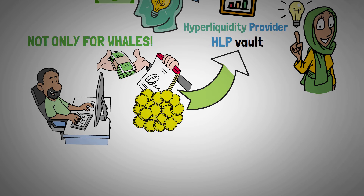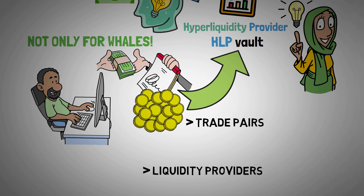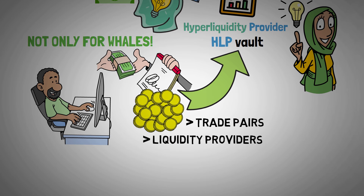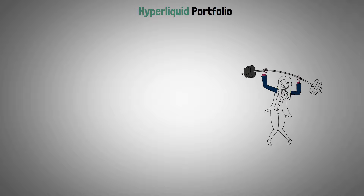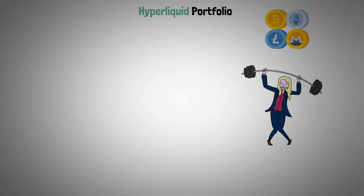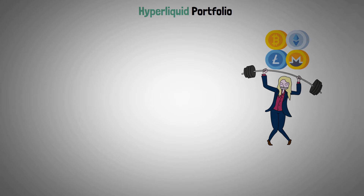Assets can be placed into these vaults by users to facilitate trade pairs and act as liquidity providers. The use of automated market-making strategies maximizes returns for these providers. Hyperliquid Portfolio: managing a diverse cryptocurrency portfolio can be difficult, but this procedure is made simpler by the Hyperliquid Portfolio feature.